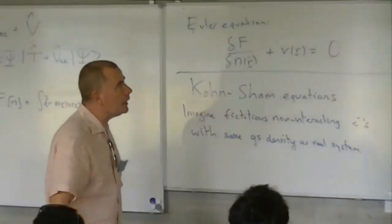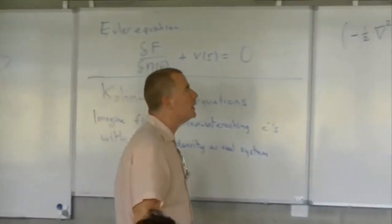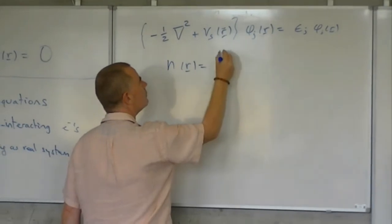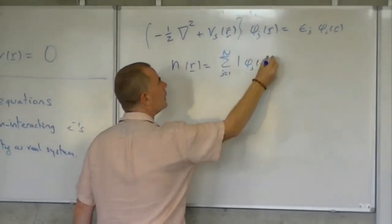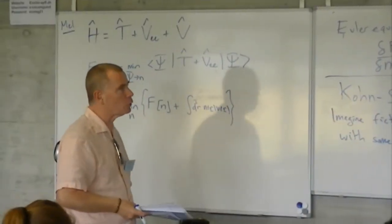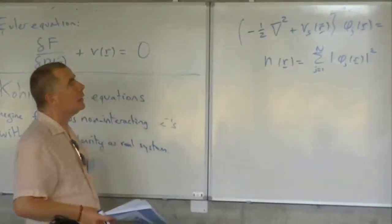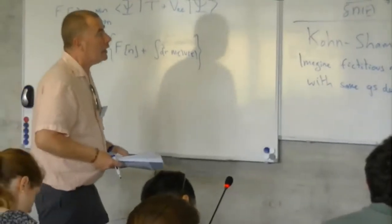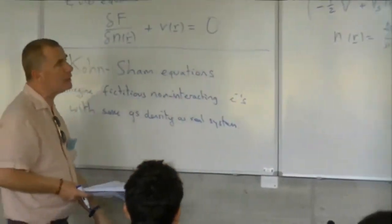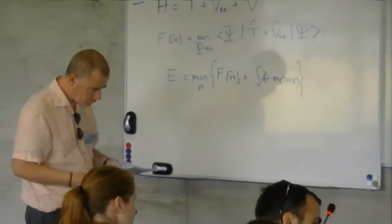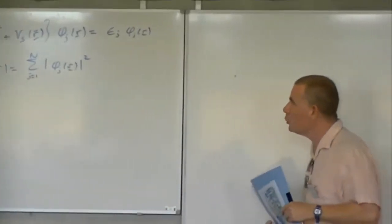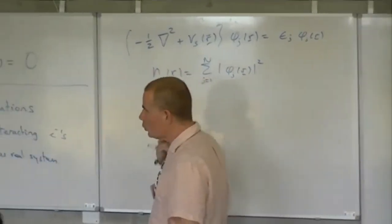But they're still electrons — they still satisfy the Pauli principle, so you occupy them in order. And their density will be the sum of the squares of the lowest Kohn-Sham orbitals up to N. You define this system so that its density is the same ground state density as the original system, assuming it exists. Now the most important part here is going to be identifying what this Kohn-Sham potential is.